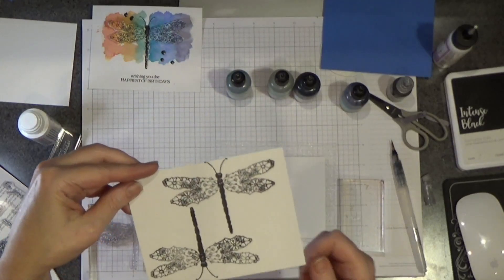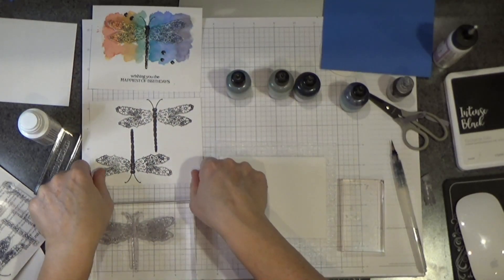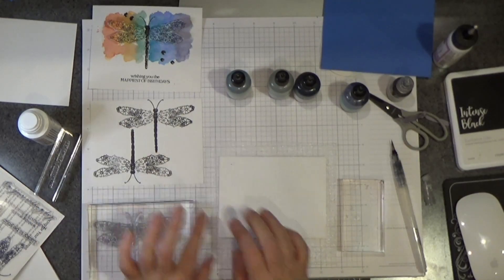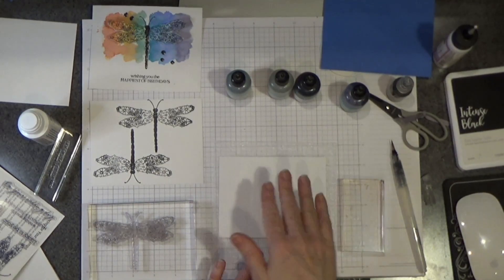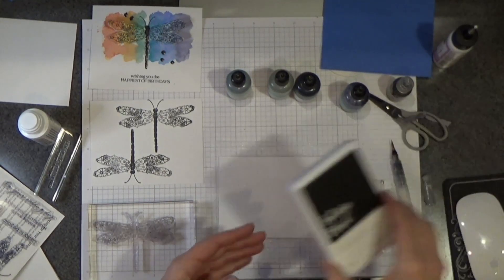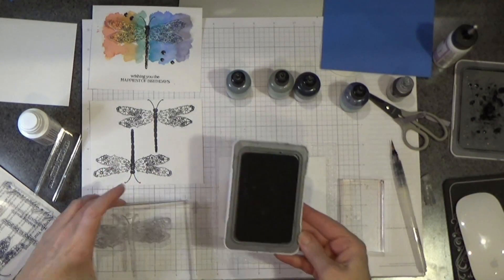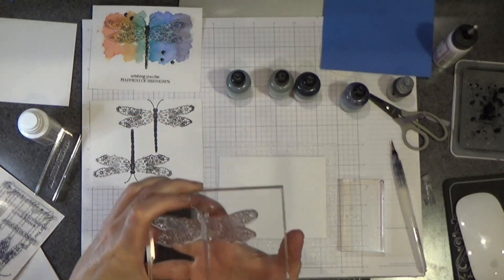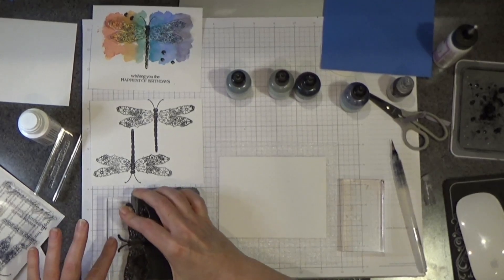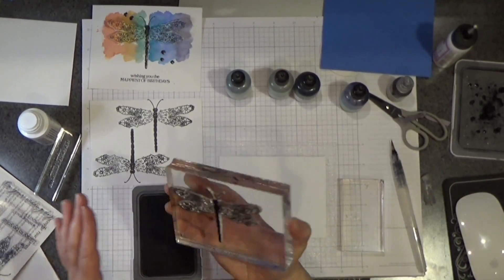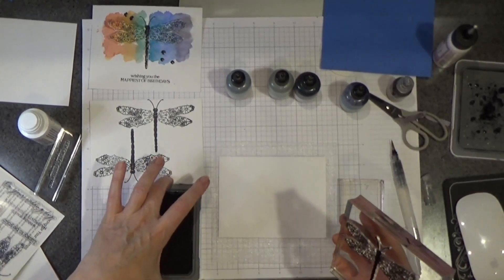I already stamped two dragonflies on a scrap piece of watercolor paper and you do want to use watercolor paper for this technique because it can handle all of the water going on here. I have some intense black ink and my dragonfly is mounted. We'll see what happens when I ink it this way. Sometimes I lay it down and ink on top of it but I think this might work.